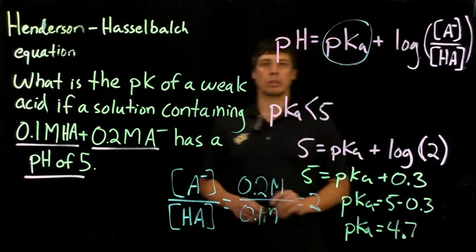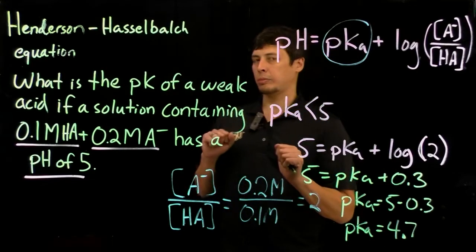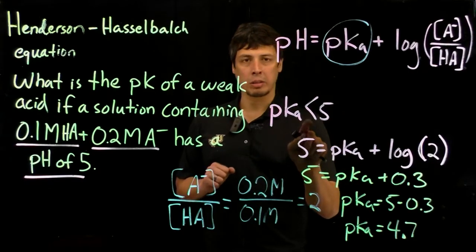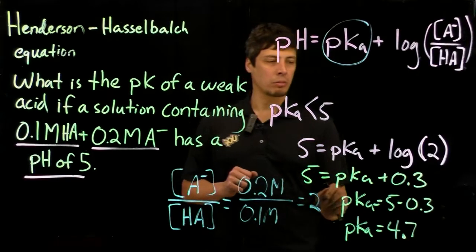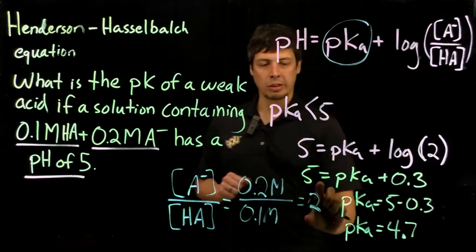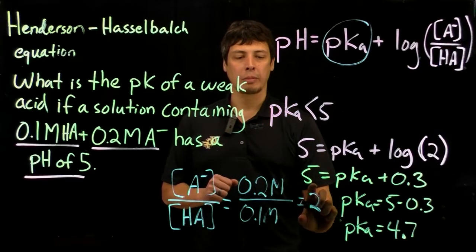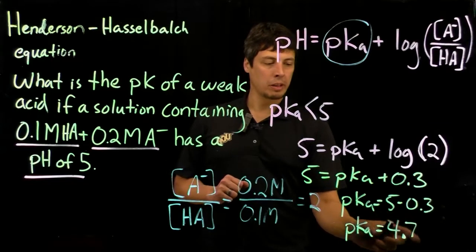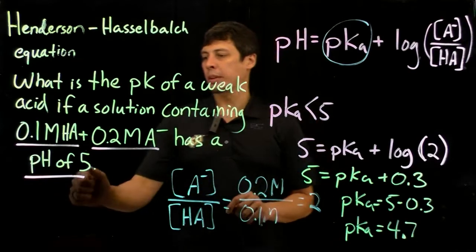So that's in line with our two predictions. One, that the pKa is going to be less than 5, and also that, because this ratio is not all that far from 1 to 1, that the pKa is going to be relatively near to the pH that we have of 5.